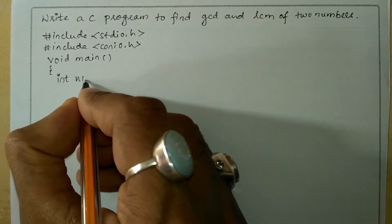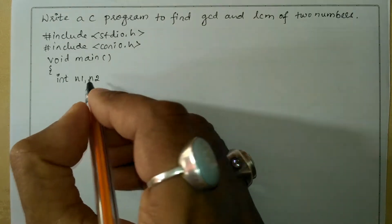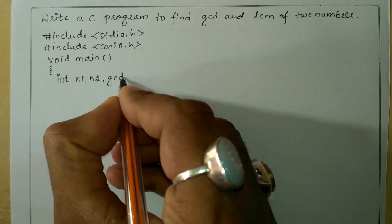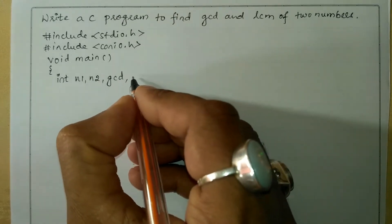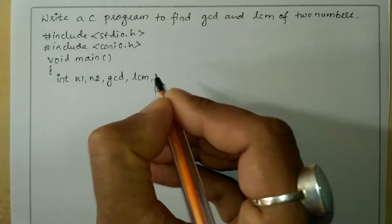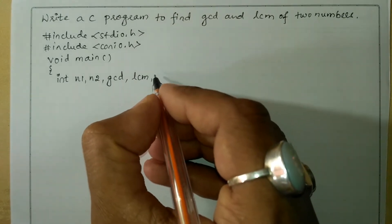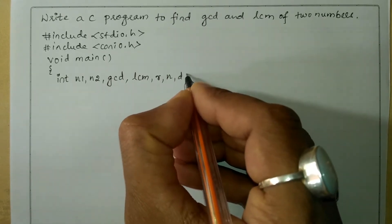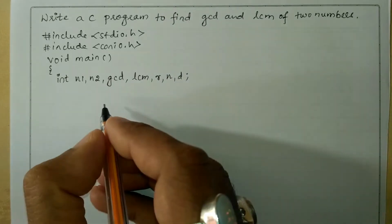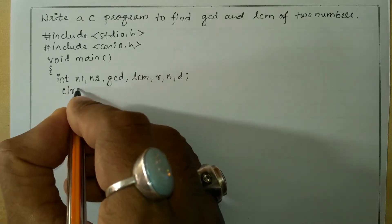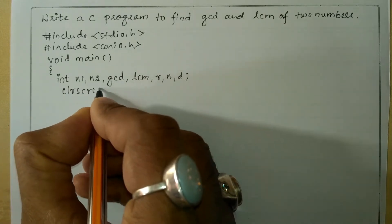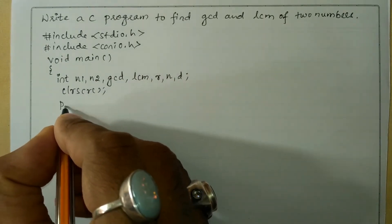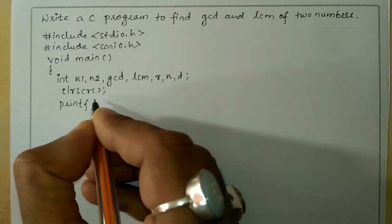Here I am going to declare all the variables with data type int. I will take n1 and n2 for number 1 and number 2. Next I will take variables GCD, LCM, R for remainder, N for numerator, and D for denominator. Then we will write the clrscr() function to clear the screen.